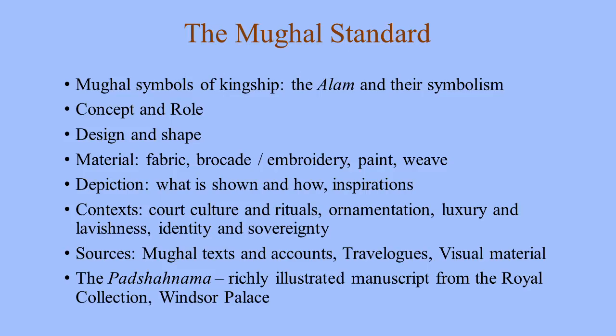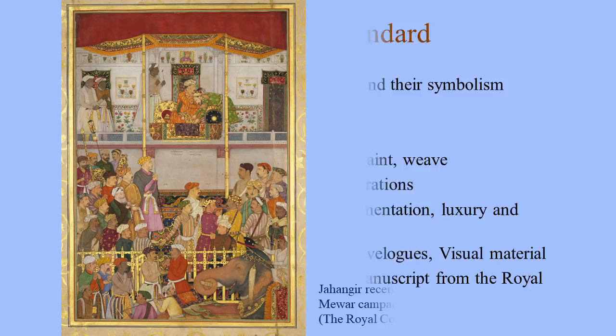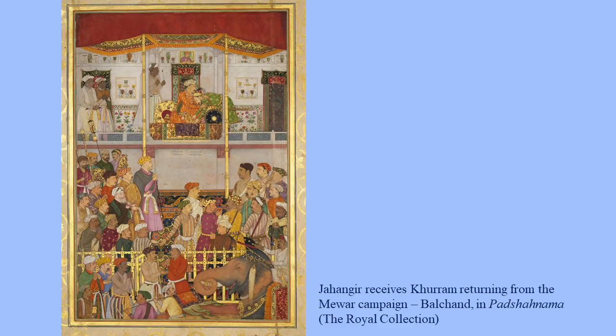For this lecture, I am going to focus on one visual source: the Padshahnama. It is probably the most stunningly illustrated Mughal miniature album in the world, and it is in the Royal Collection at Windsor. It was acquired in the late 18th century by a British aristocrat at the court of Asafuddawla of Awadh, and then presented to George III as an object of special importance. The Padshahnama is a history of Shah Jahan, showing depictions of various events and incidents of his life.